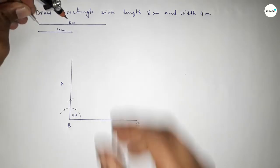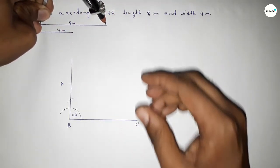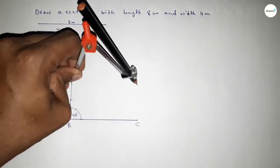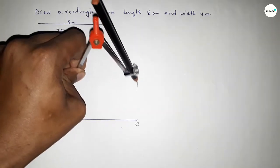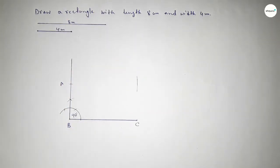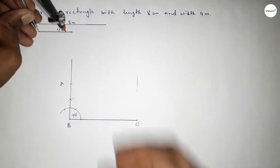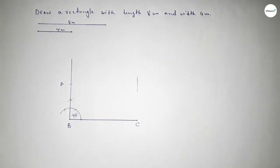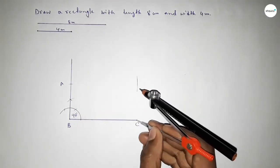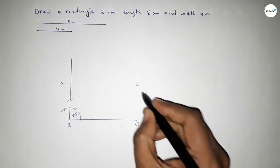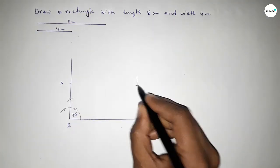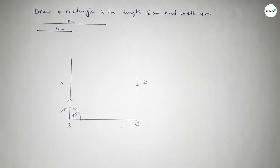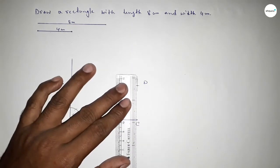Taking the length 8 centimeters using the compass and putting the compass on point C, drawing arcs so both curves intersect at point D.